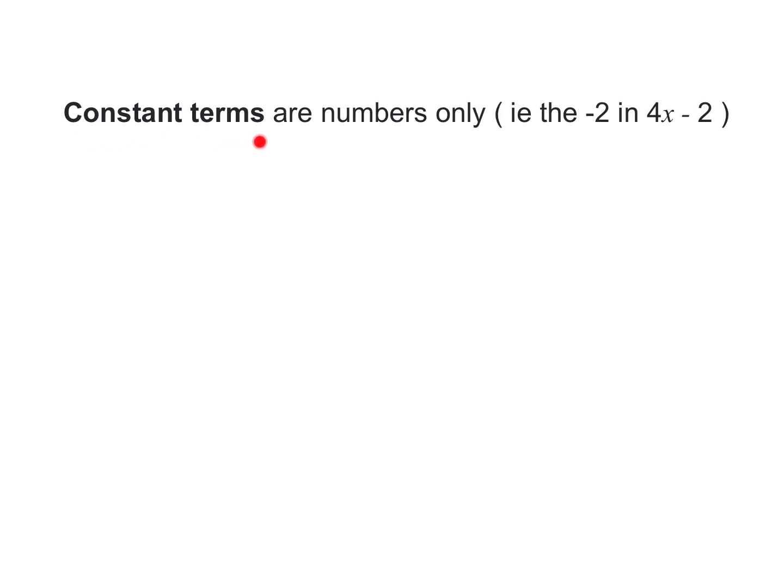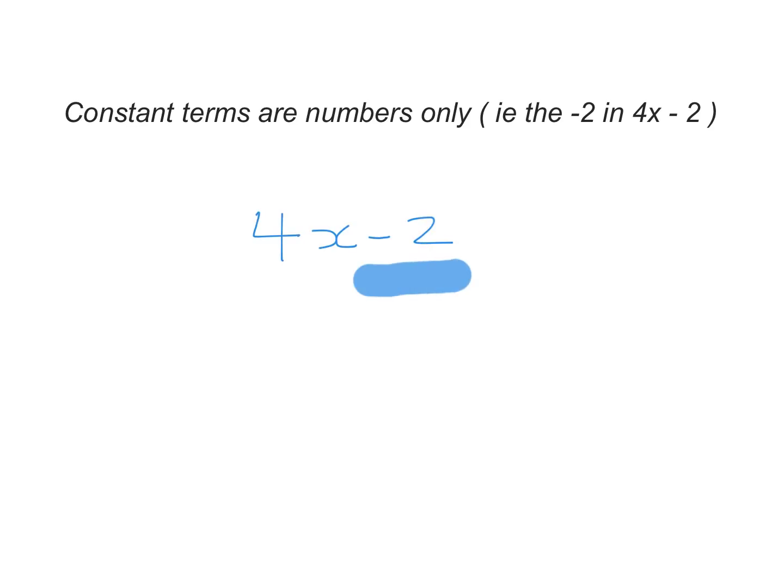Now constant terms. Constant terms are numbers only. In this expression over here, the negative 2 is the constant term. It is really important that in the expression, we make sure to include the minus 2 as the constant term.